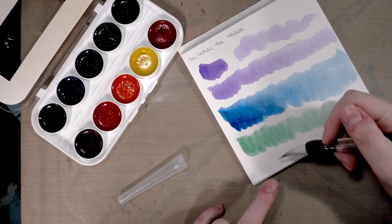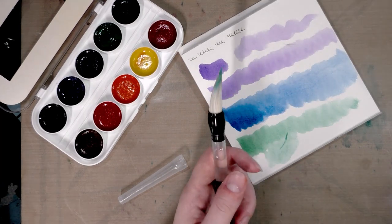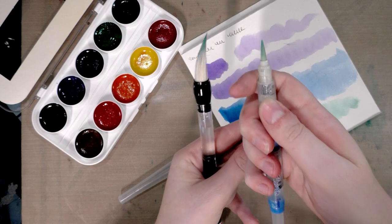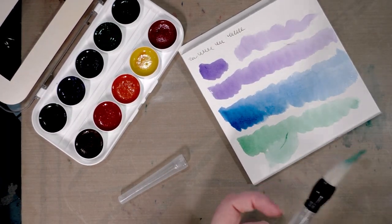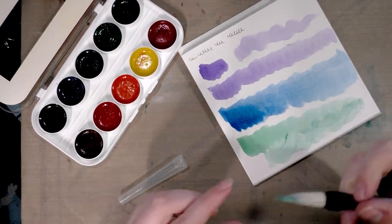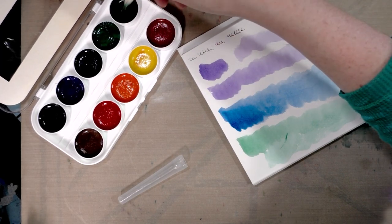You know, one of my complaints about water brushes is that even the largest ones are too small. This thing is huge compared to even the largest water brush tip. I mean, just massive in comparison. It's like a full size sumi brush. So if you enjoy painting on the go and you have a problem covering large areas of paper, this might be a really good solution for you.